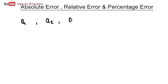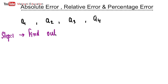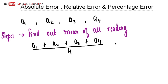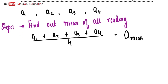Suppose you will be having four readings: A1, A2, A3, and A4. Step 1 is to find out the mean of all readings. Finding out the mean is very simple: that is A1 plus A2 plus A3 plus A4, the summation of all readings divided by the number of readings — that is 4. We will name it A_mean. That is the end of Step 1.